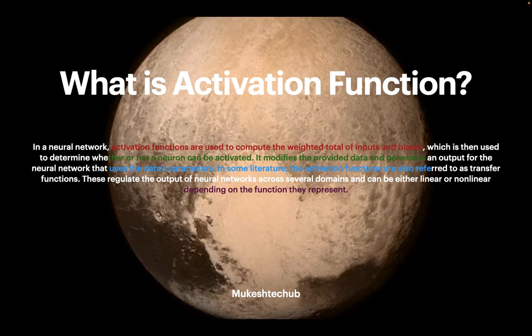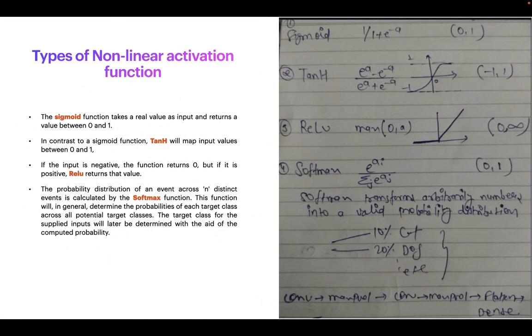These are the activation functions. The first one is sigmoid, with a range from 0 to 1. The next one is tanh, with a range from minus 1 to 1. Whatever the input range, it will generate output between minus 1 to 1.